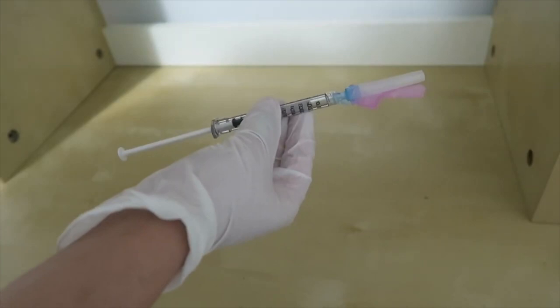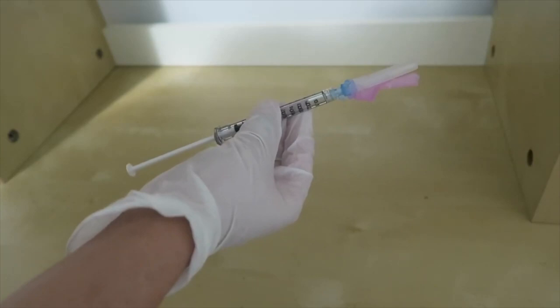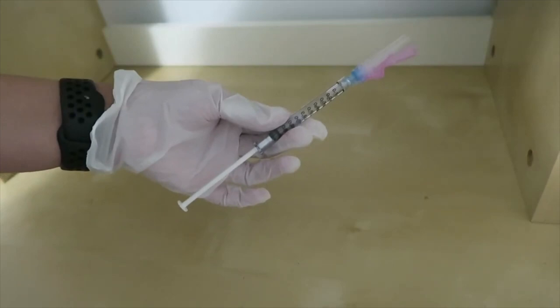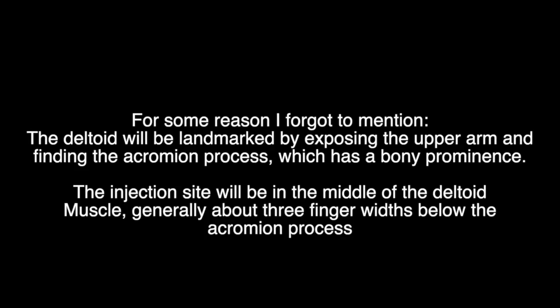It is notable that there are 3 possible sites for an IM injection. The sites are the vastus lateralis, ventral gluteal and the deltoid. Today I will be administering this injection into the deltoid. It's at this point that I will assist the patient to appropriate position. I would ask them to sit down and relax their arm and relax their shoulder.